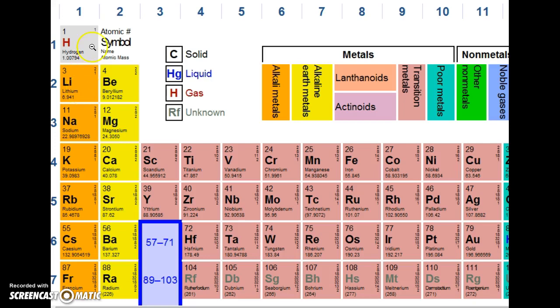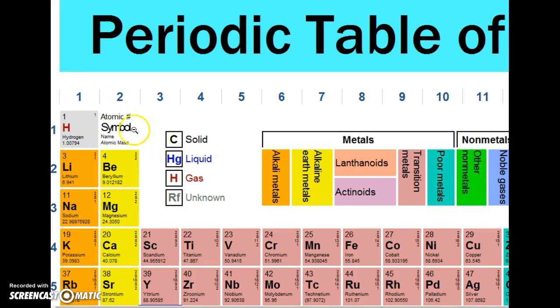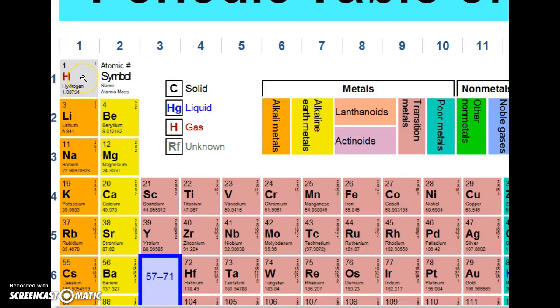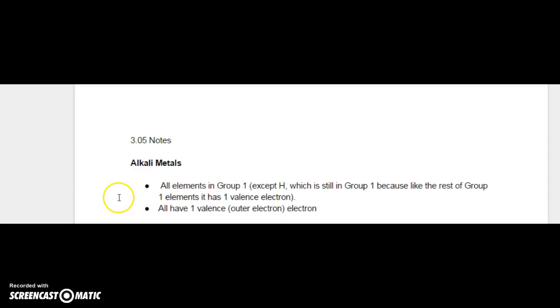Except for what element? Hydrogen. Because hydrogen is actually a non-metal. It's the only non-metal on this side of the periodic table. All the other non-metals are over here, but hydrogen is over here. So why is hydrogen over here if it's a non-metal? Well, because it only has one electron, so one valence electron, so it gets stuck in group number one. So all the rest of group one are called alkali metals. So make sure you write that down. Alkali metals are all the elements in group one except hydrogen, which is still in group one, even though it is a non-metal.